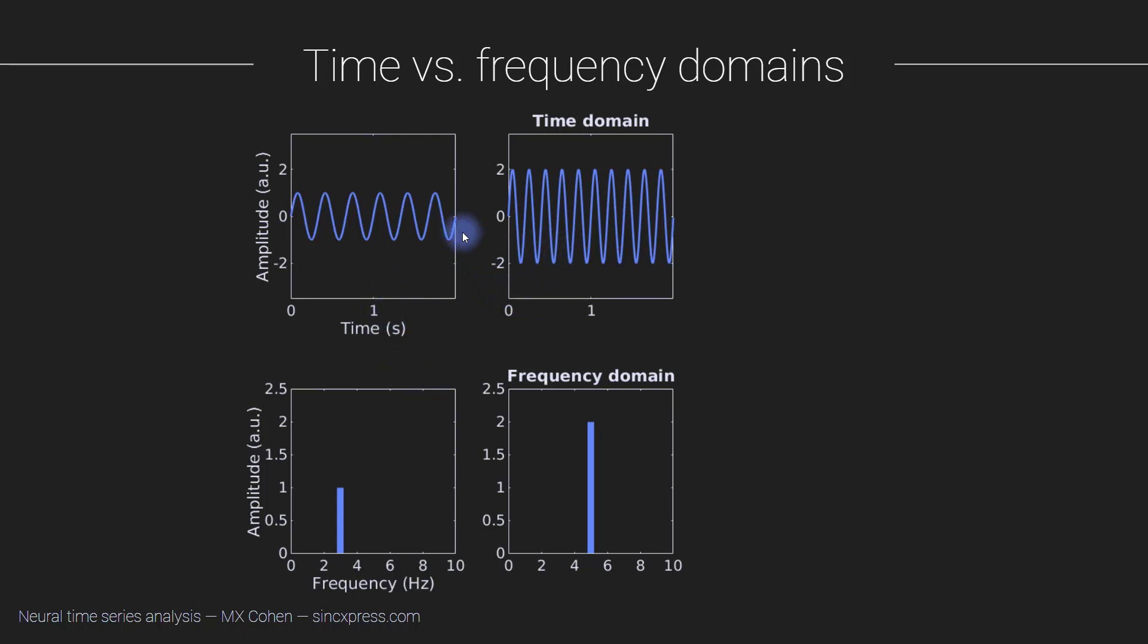So these are two pretty simple signals. There's really just one component in each of these signals. Here we have another signal which is still pretty simple but a little bit more complicated, a little bit more involved. You can probably guess that the way I created this signal was by combining these two. Literally this thing plus this thing gives us this thing.